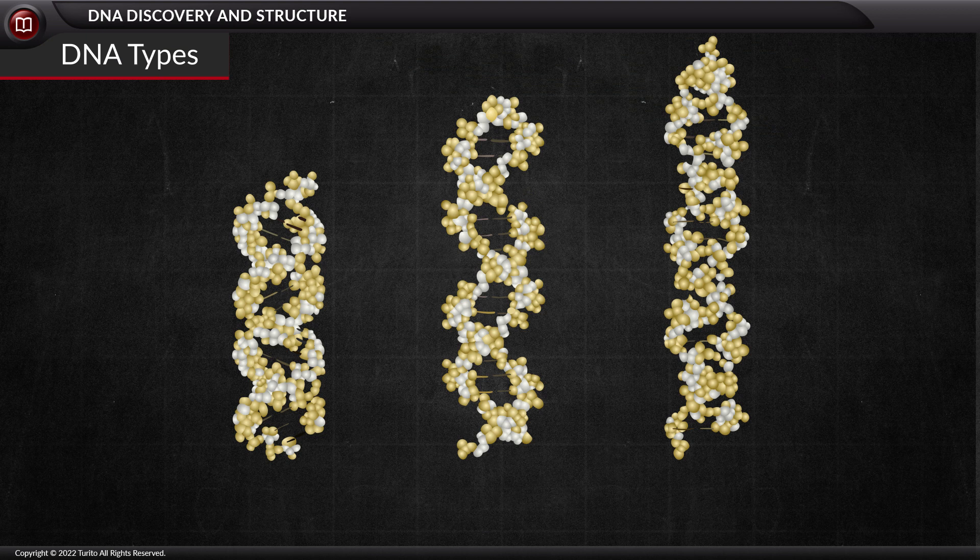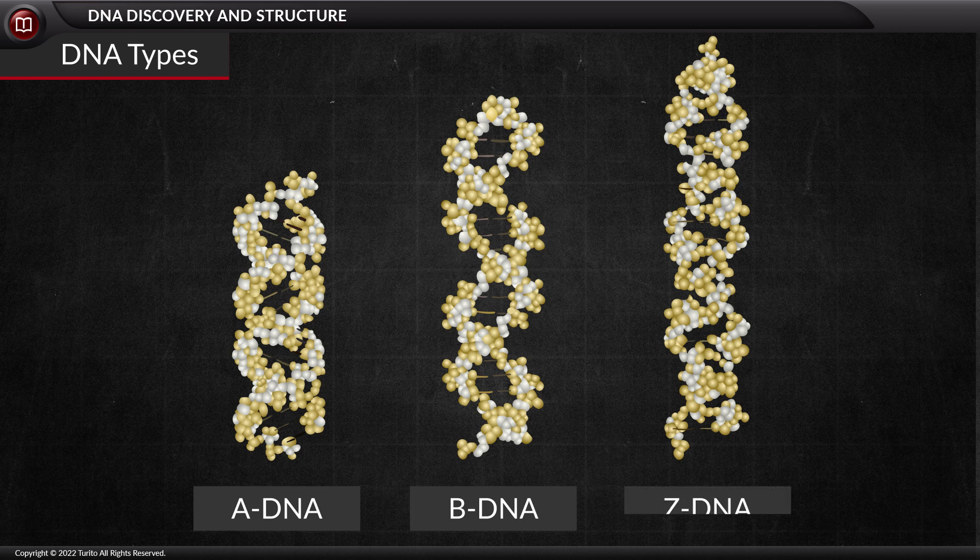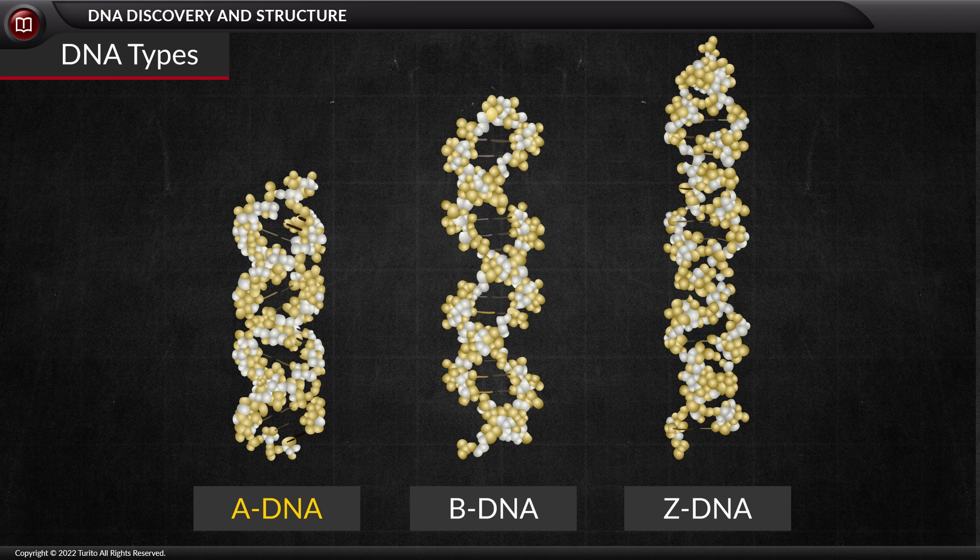Before concluding, let us also see the types of DNA. DNA helix can form three different types of structures, namely A-DNA, B-DNA, and Z-DNA. Of these, A-DNA and B-DNA are right-handed helices, and Z-DNA is a left-handed helix. These are the details on DNA discovery and structure.